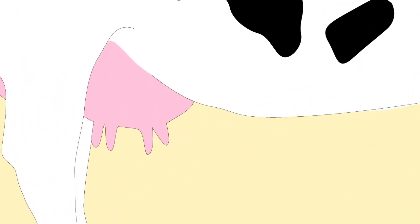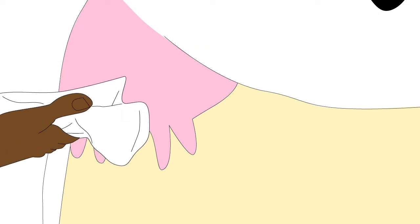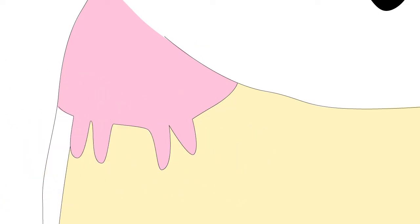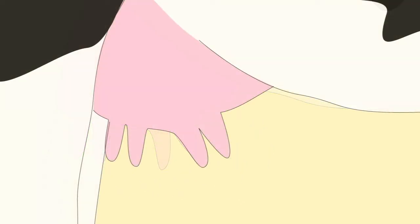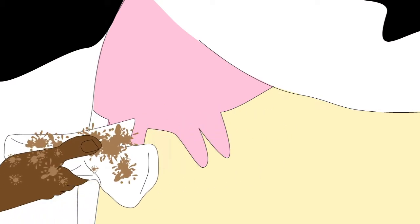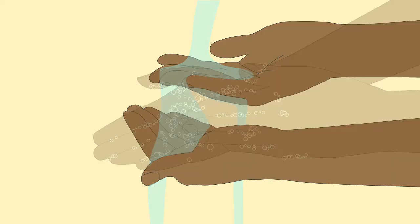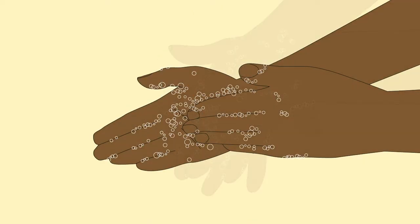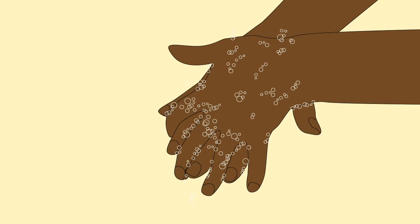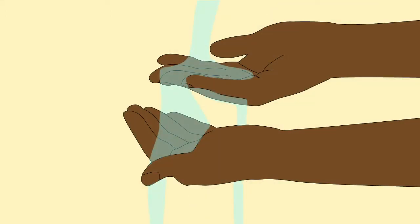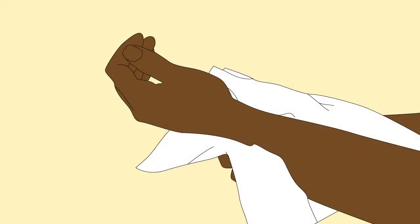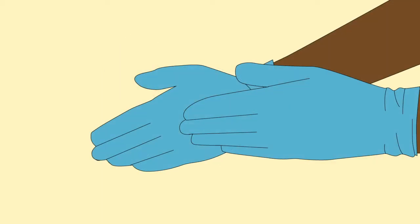It is important not to take contagious mastitis bacteria from cow to cow by hands or clothes. Milkers should wash and dry hands before starting to milk and wash and dry hands between cows. Best practice is to wear nitrile gloves that are easily cleaned.